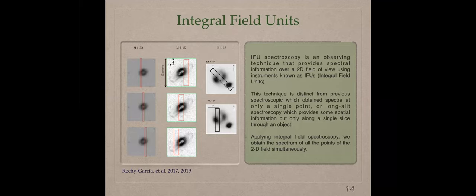But there are other techniques that maybe you know, that is the integral field units. This technique provides spectral information over a two-dimensional field of view using instrument and all issues. This technique is distinct from previous spectroscopy, which obtained spectra at only a single point, or long-slit spectroscopy, which provides some spatial information, but only along a single slit show an object. You need to locate different slits in the planetary nebulae in order to have all the kinematic information. But, applying integral field spectroscopy, we obtain the spectrum of all the points of the two-dimensional field.